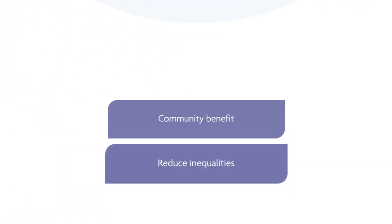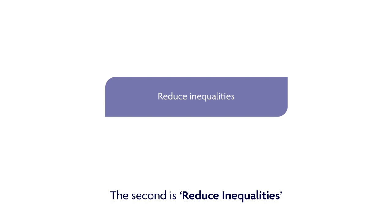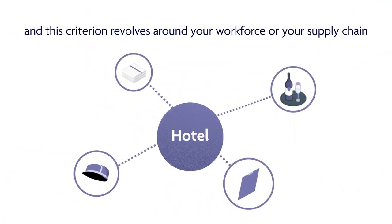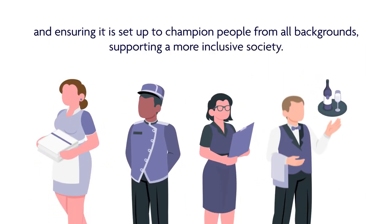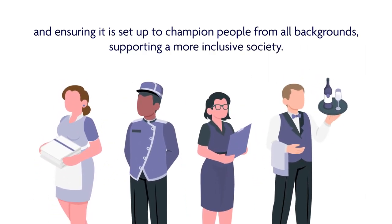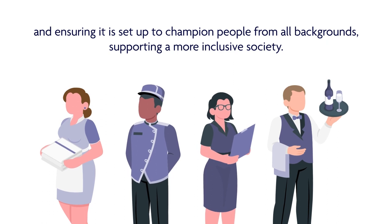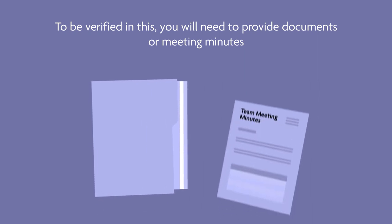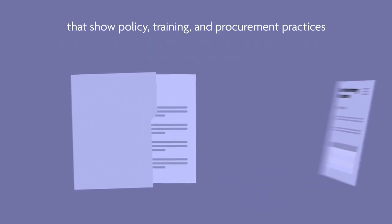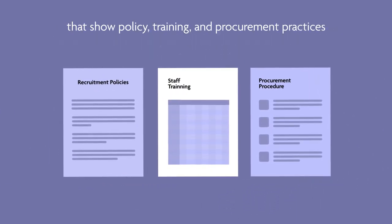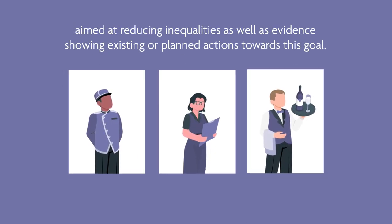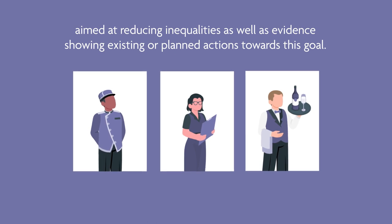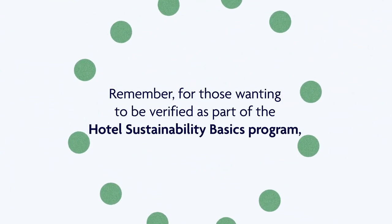The second criterion is to reduce inequalities. This revolves around your workforce or your supply chain, ensuring it is set up to champion people from all backgrounds and support a more inclusive society. To be verified, you will need to provide documents or meeting minutes that show policy, training, and procurement practices aimed at reducing inequalities, as well as evidence showing existing or planned actions towards this goal.